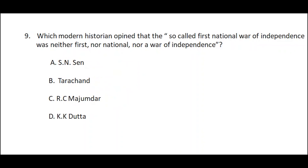Question number nine: Which modern historian opined that the so-called first national war of independence was neither first, nor national, nor a war of independence? Option A: S.N. Sen, option B: Tarachand, option C: R.C. Majumdar, option D: K.K. Dutta. The correct answer is option C — R.C. Majumdar.